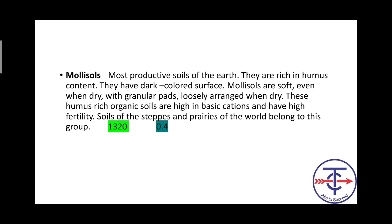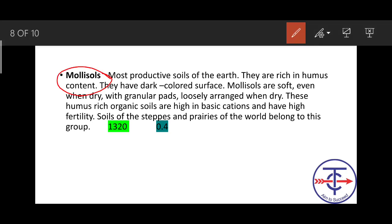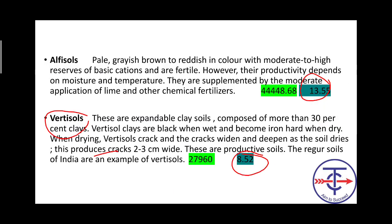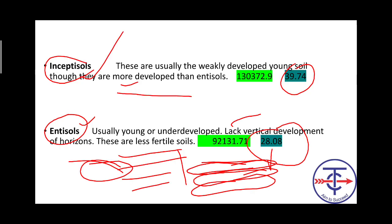Mollisols are the most productive soils of the earth, rich in humus content. They have dark-colored surface, are soft even when dry, granular, loosely arranged when dry. The humus-rich organic soils are high in basic cations and have high fertility. These are found in steppes or prairies - temperate grasslands where wheat is grown. Mollisol is the most productive soil.